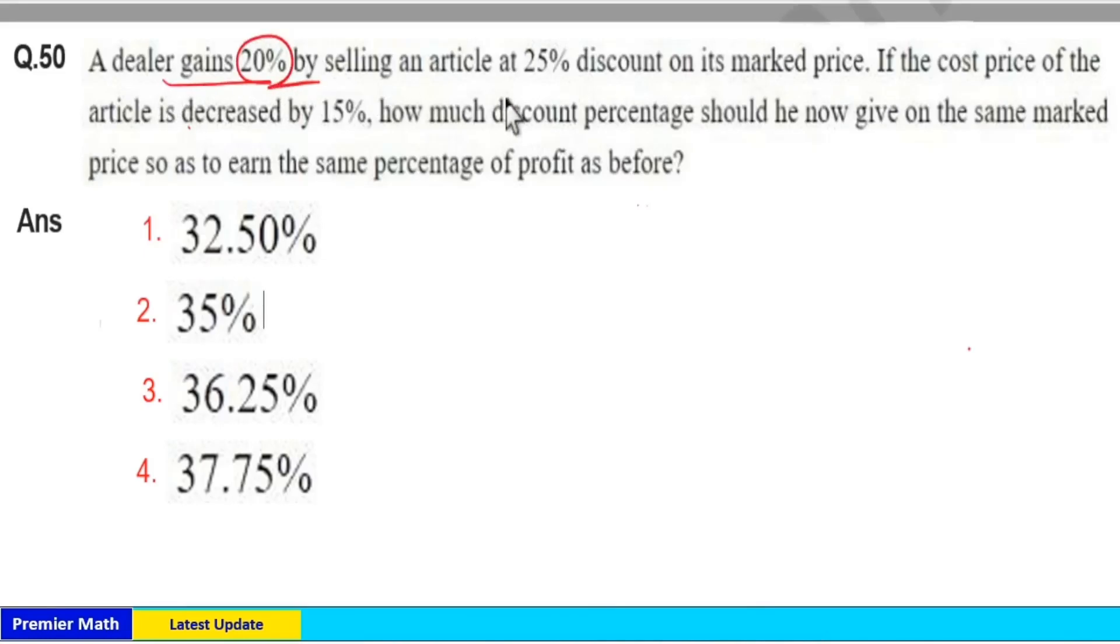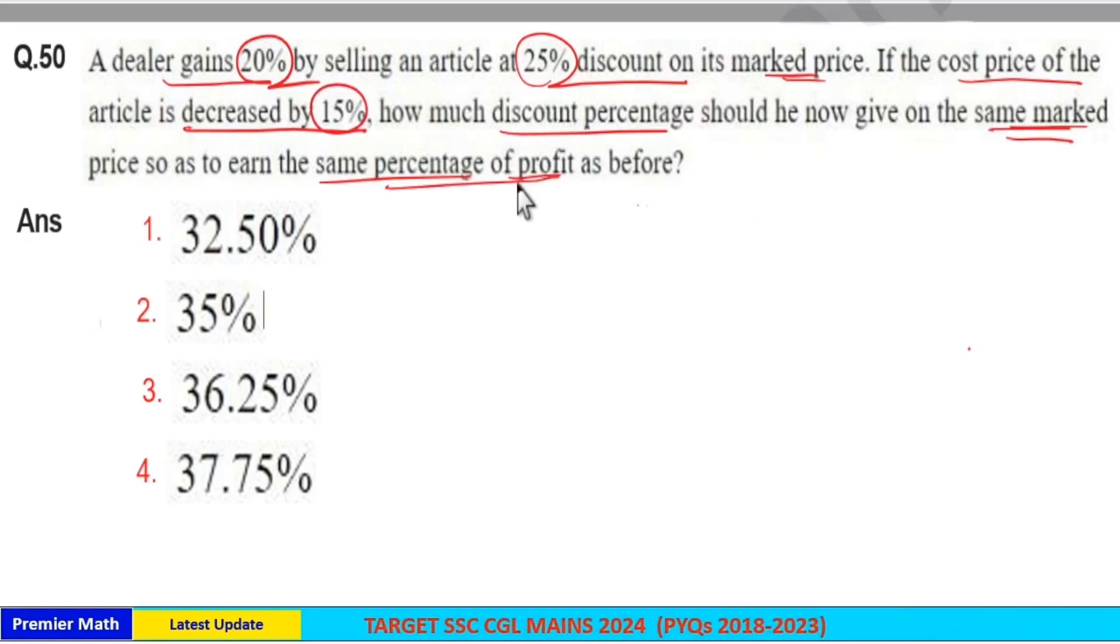A dealer gained 20% by selling an article at 25% discount on its market price. If the cost price of the article is decreased by 15%, how much discount percentage should he now give on the same market price so as to earn the same percentage of profit as before?